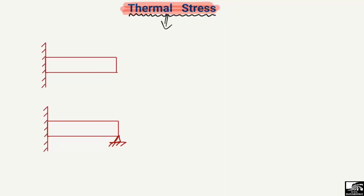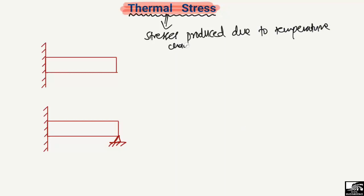Thermal stresses can be defined as the type of stresses that are produced in a body due to temperature changes. We have different types of stresses — normal stresses, shear stresses, bearing stresses, torsional stresses — but thermal stress is a special type which mainly depends on the change in temperature.